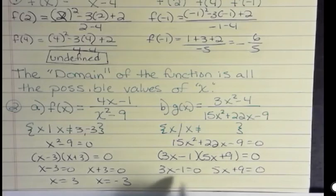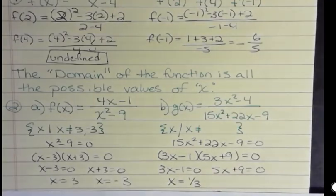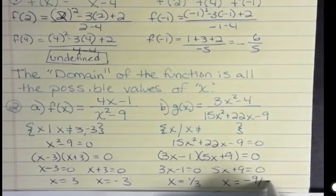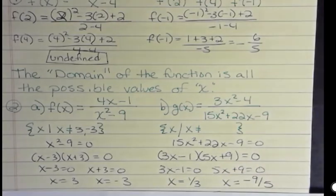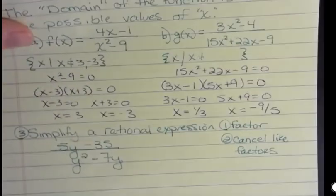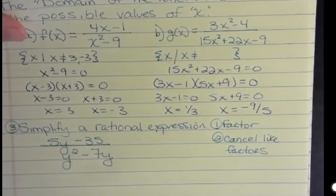And I'm going to move the 1 to the other side and divide by 3 to get x is 1/3. For the other one, I'm going to move the 9 to the other side and divide by 5 to get negative 9 over 5. Now solving those basic equations should be something that you have confidence in at this level of the game. But you can take a little more time and solve them out if you'd like.